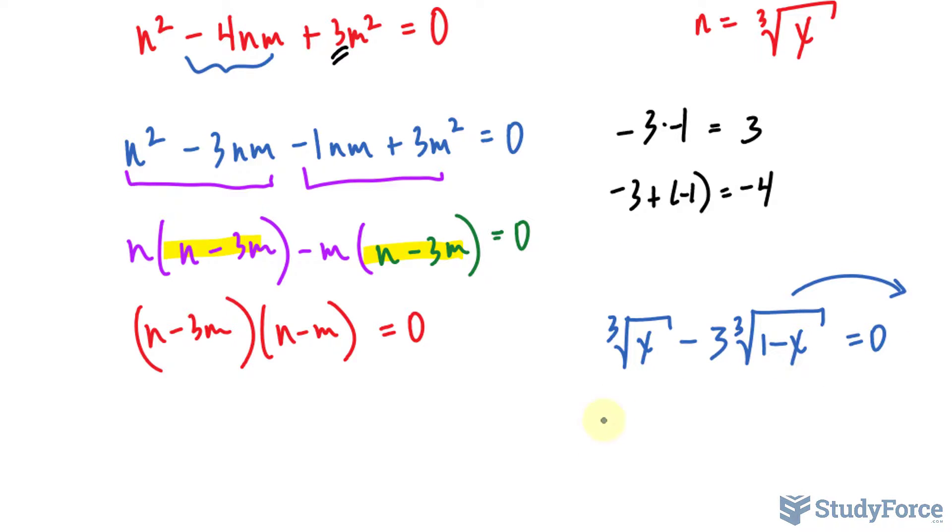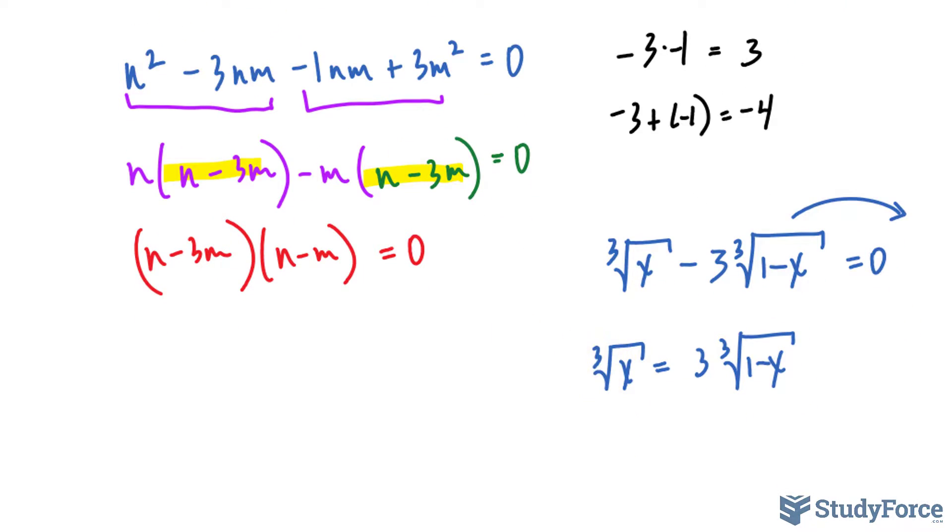I'll bring that over, leaving me with the cube root of x is equal to 3 cube root of 1 minus x. To get rid of this cube root, I will cube both sides. Cubing the left side gives me x, and cubing the right side will give me, remember, we distribute that power of 3 to the 3. So we have 3 to the power of 3, which is 27, and distributing this exponent to that factor gives us 1 minus x.